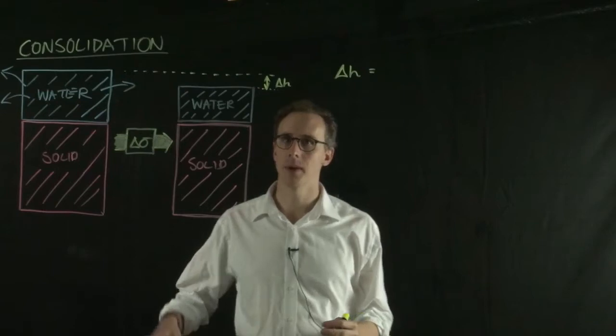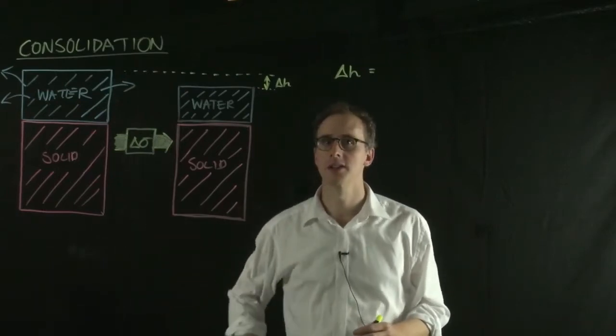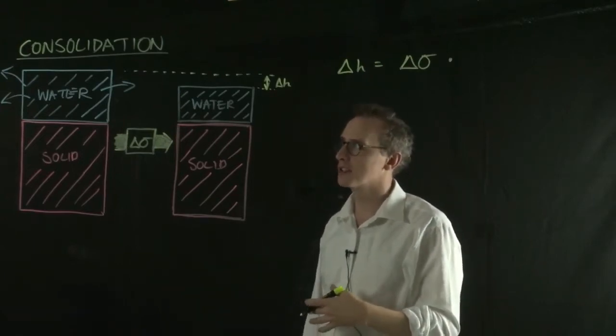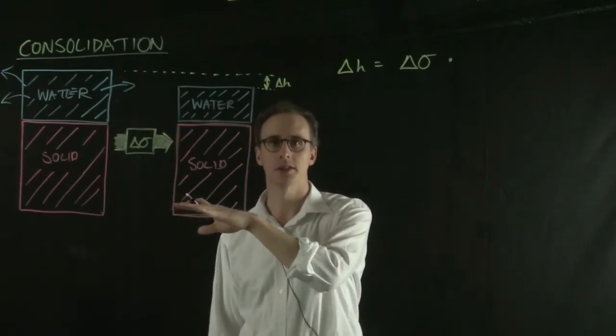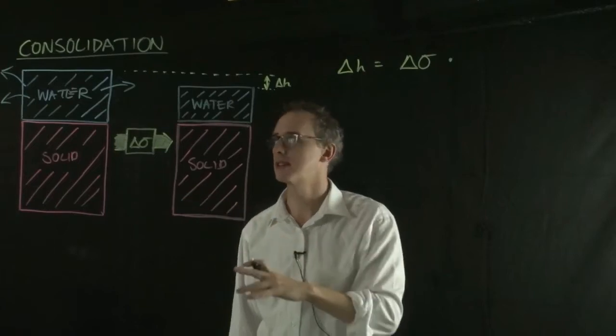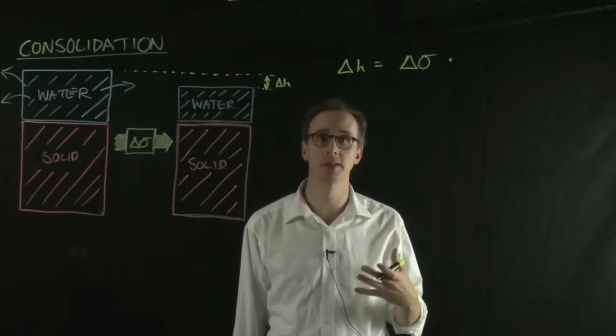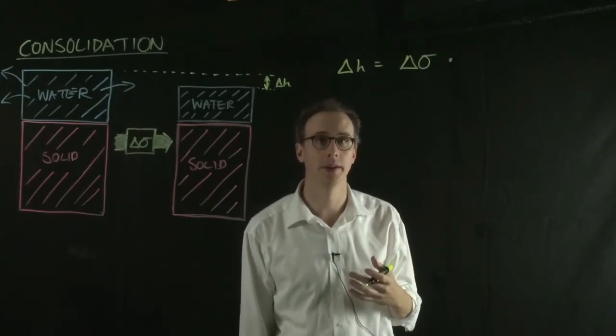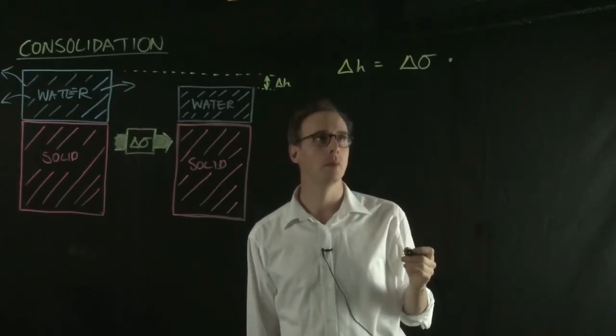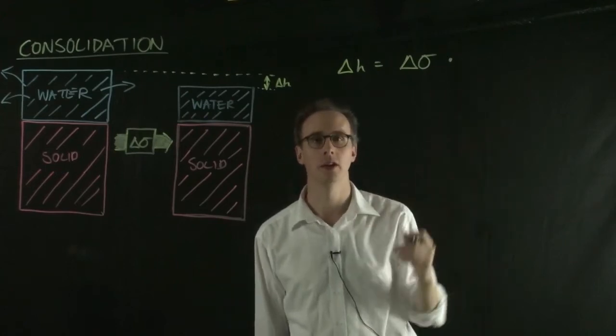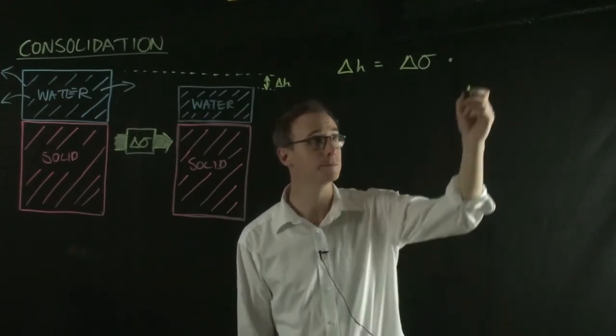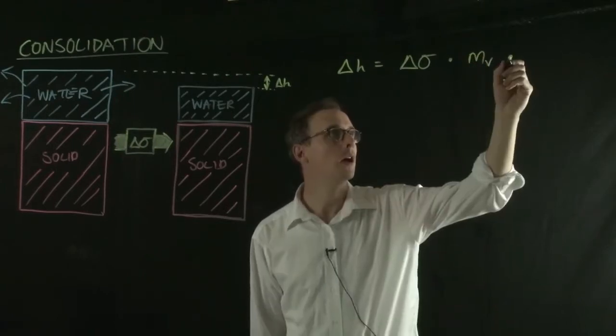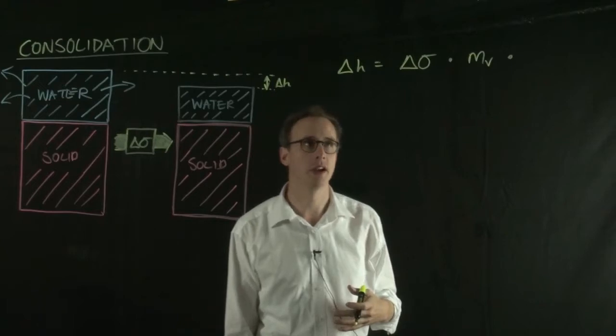As we've already said, it depends on a change in stress within the soil. It depends on how susceptible the material is to settlements, in some ways how squishy the material is. A more squishy material will have a greater settlement. We give that a parameter called the coefficient of volume compressibility, or MV.